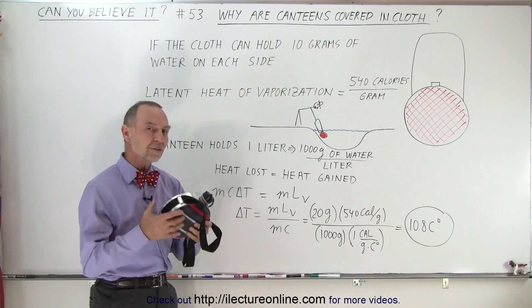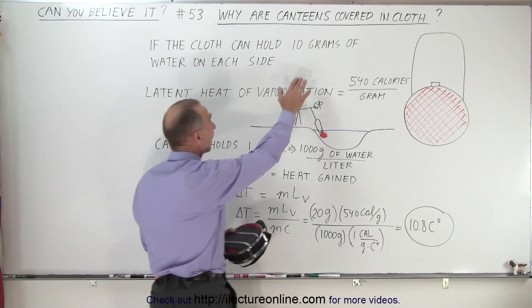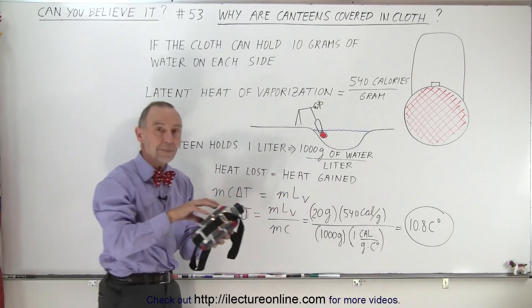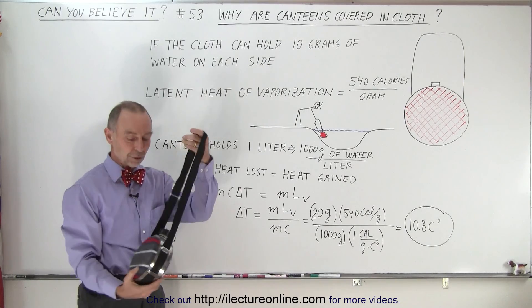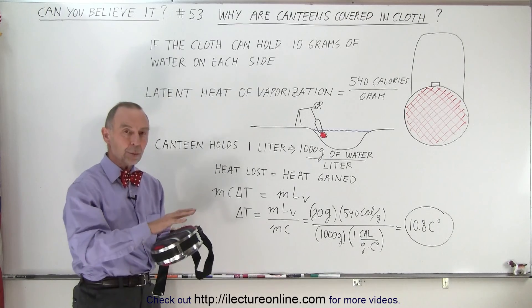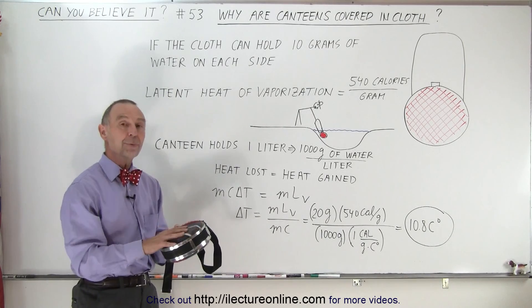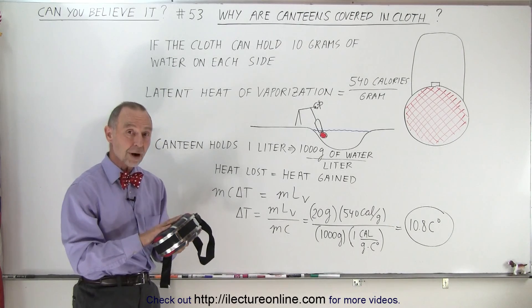Now the fleece on both sides is made so that it can absorb quite a bit of water. Let's say that on each side you can absorb 10 grams of water, so it's nice and wet. Now as you're carrying around your canteen as you're hiking, the air will then slowly evaporate the moisture out of the cloth until the cloth is dry.